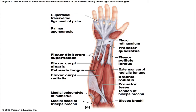Now we look at the deep muscles of the forearm. The first is the flexor pollicis longus, which is partially covered by the flexor digitorum superficialis and parallels the flexor digitorum profundus laterally. Its origin is the anterior surface of the radius and the interosseous membrane, and its insertion is the distal phalanx of the thumb. Its prime action is to flex the distal phalanx of the thumb, and it is innervated by a branch of the median nerve — cervical nerve 8 and the first thoracic nerve.